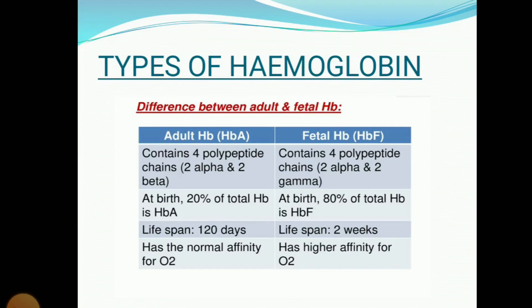The lifespan of adult hemoglobin is about 120 days, whereas the lifespan of fetal hemoglobin is nearly two weeks. Adult hemoglobin has normal affinity for oxygen, whereas fetal hemoglobin has a much greater affinity for oxygen as compared to adult hemoglobin.